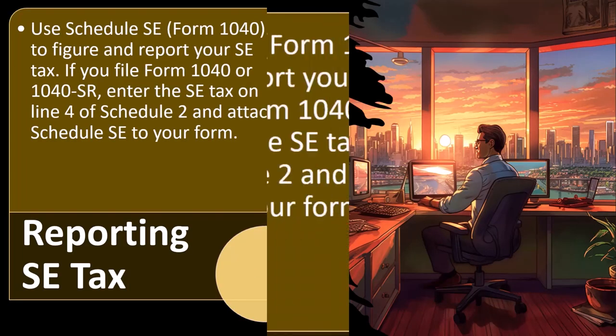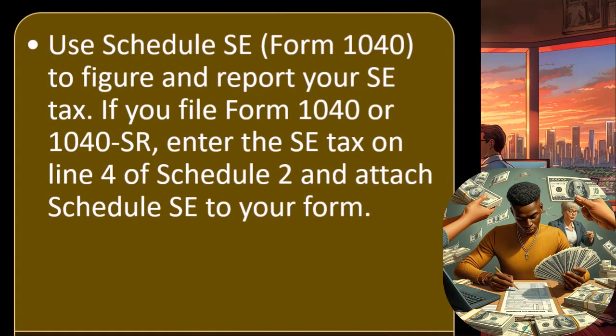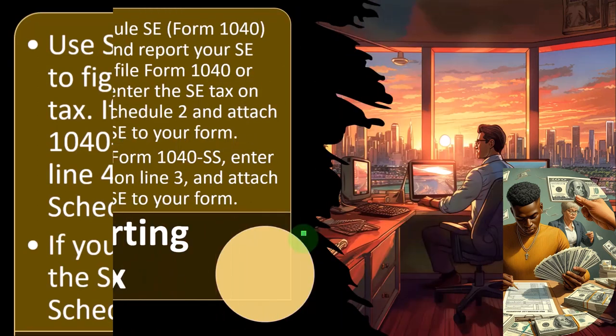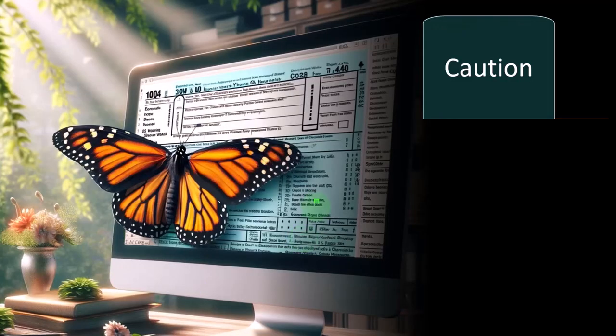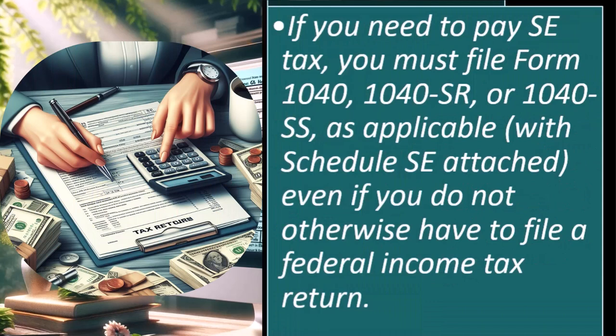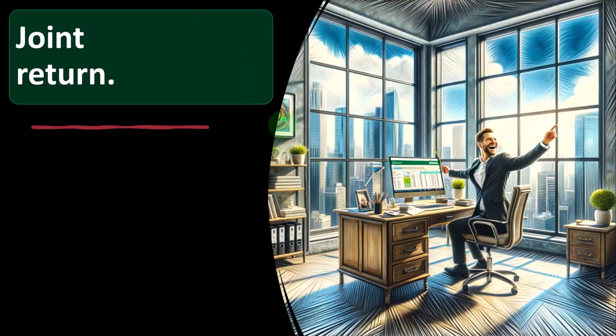Reporting self-employment tax: use Schedule SE, Form 1040, to figure and report your self-employment tax. We'll take a look at that in an example problem in a following presentation. If you file Form 1040 or 1040-SR, enter the self-employment tax on line 4 of Schedule 2 and attach Schedule SE. If you file Form 1040-SS, enter the self-employment tax on line 3 and attach Schedule SE. Caution: if you need to pay self-employment tax, you must file Form 1040, 1040-SR, or 1040-SS with Schedule SE attached, even if you do not otherwise have to file a federal income tax return. The IRS still wants you to pay your self-employment tax, and filing the return also feeds into your Social Security benefits.